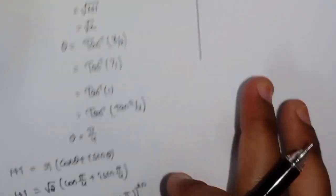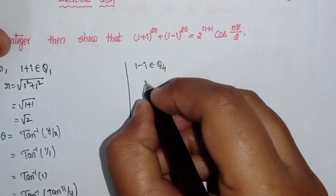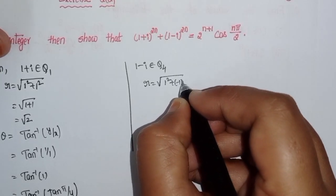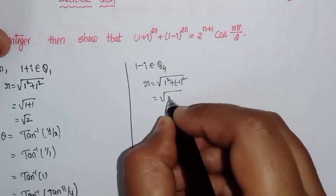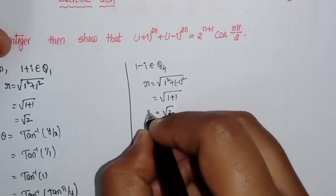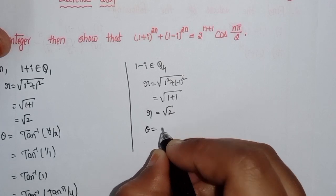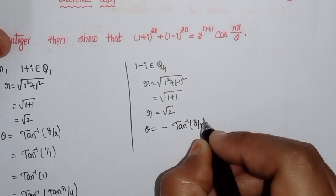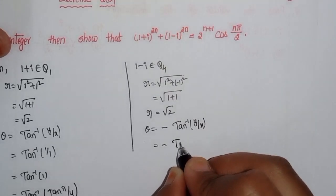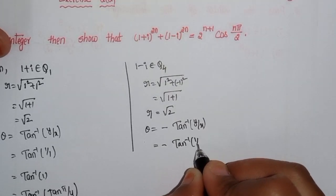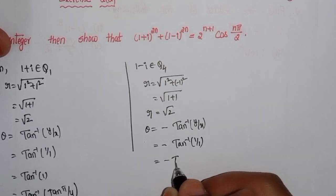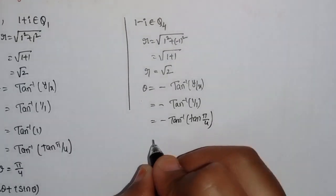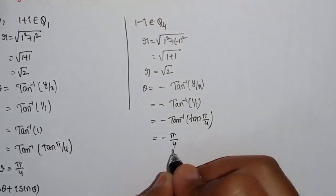Similarly for (1-i): r = √(1² + (-1)²) = √2. Since it's in Quadrant 4, θ = -tan⁻¹(1/1) = -tan⁻¹(tan(π/4)) = -π/4.